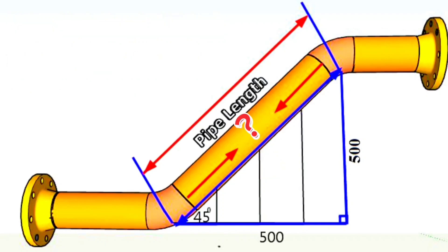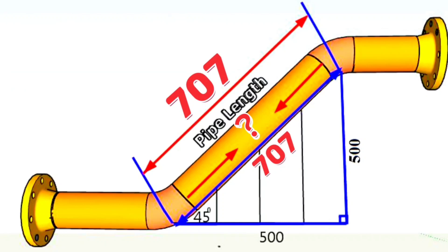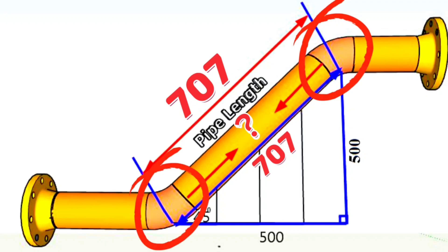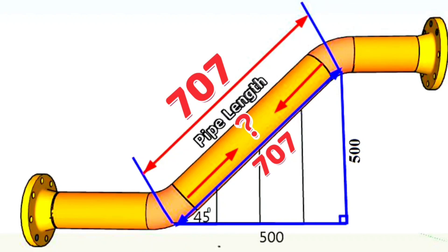The distance from the center of the elbow to the center of the elbow was 707 mm. There are two 45-degree elbows here, and if we subtract their lengths from the total distance, we can find the length of the pipe piece.